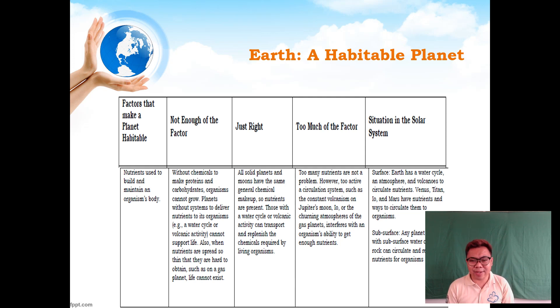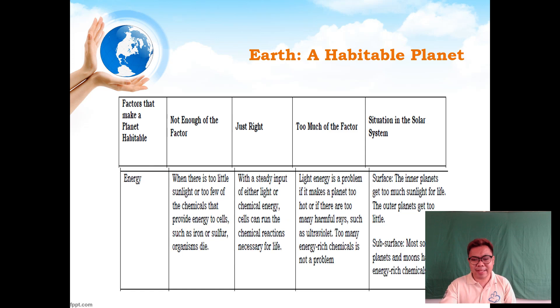In terms of energy, when there's not enough—too little sunlight or too few chemicals that provide energy to cells such as iron or sulfur—organisms will eventually die. If the nutrients or energy are just right, with steady input of light and chemical energy, cells can run the chemical reactions necessary for life.